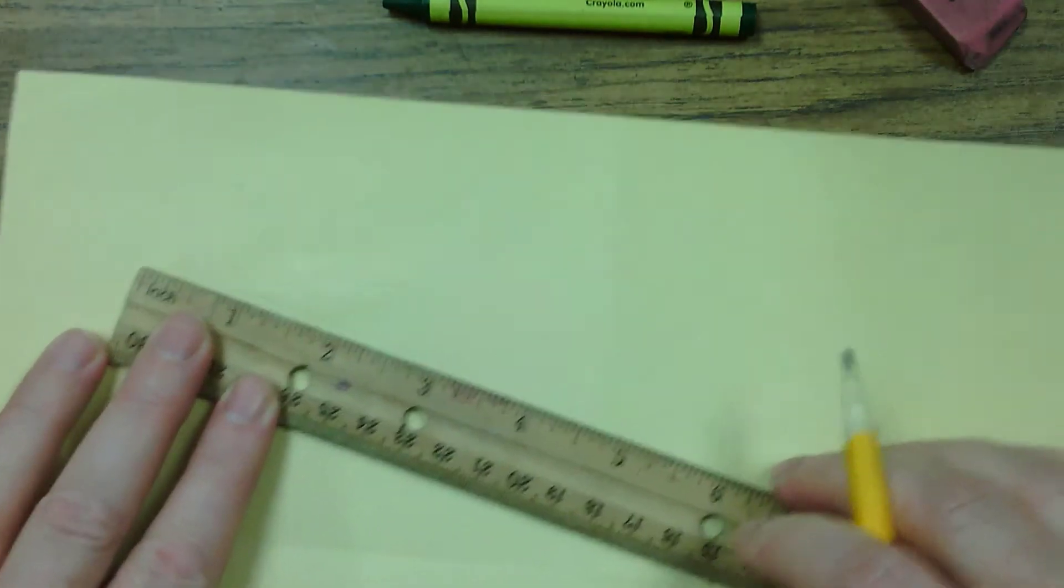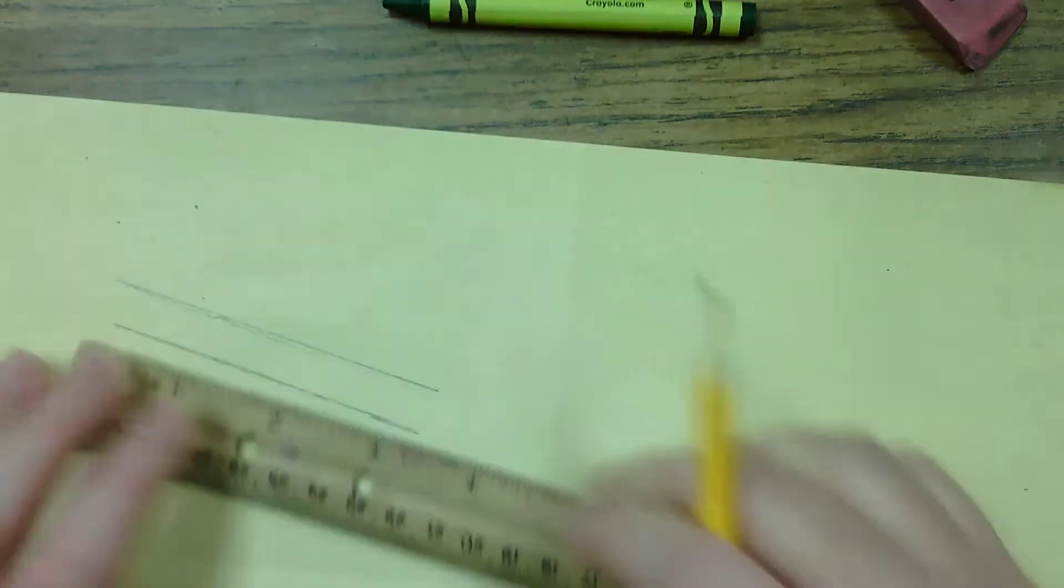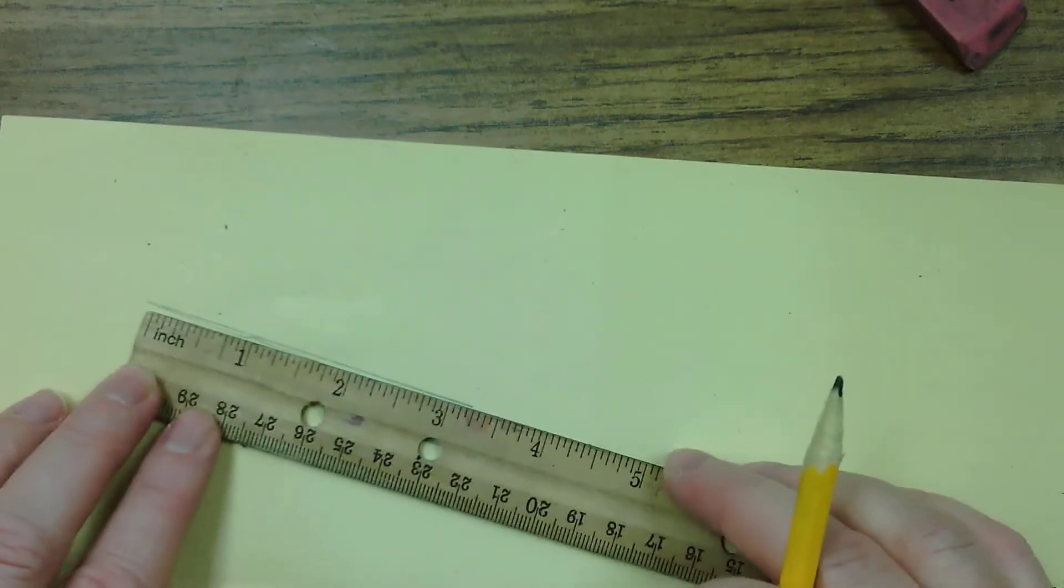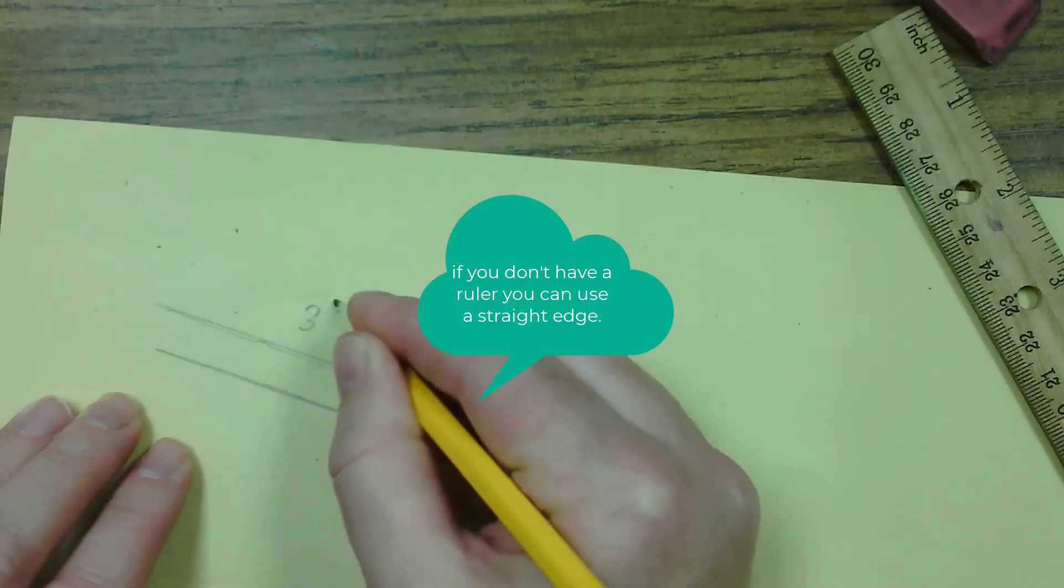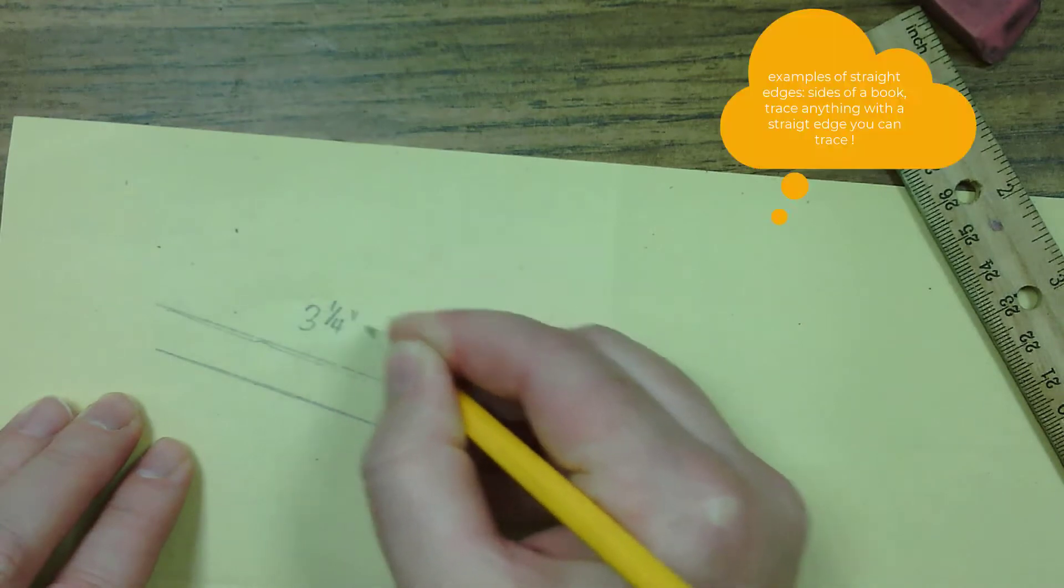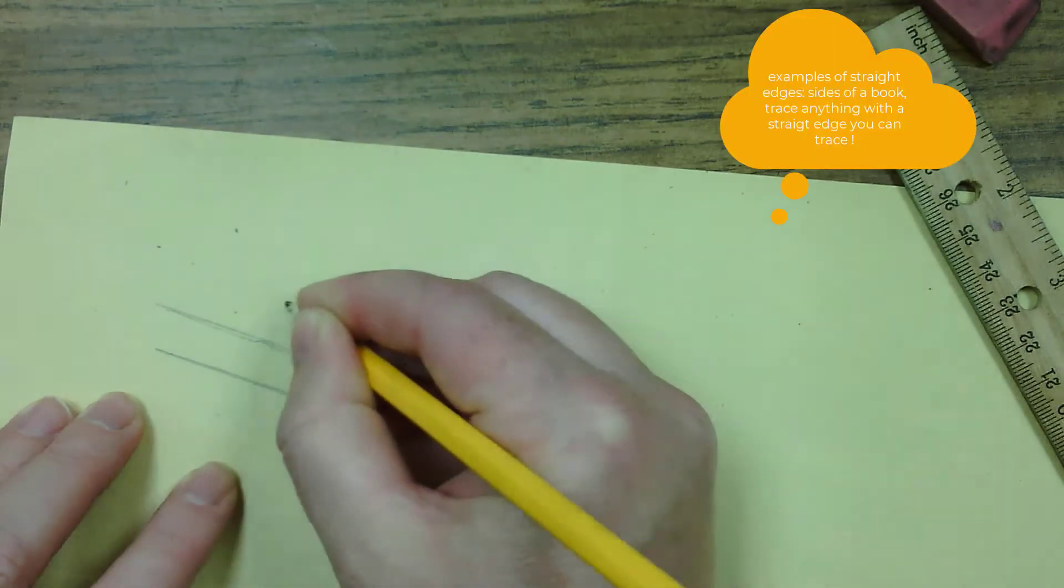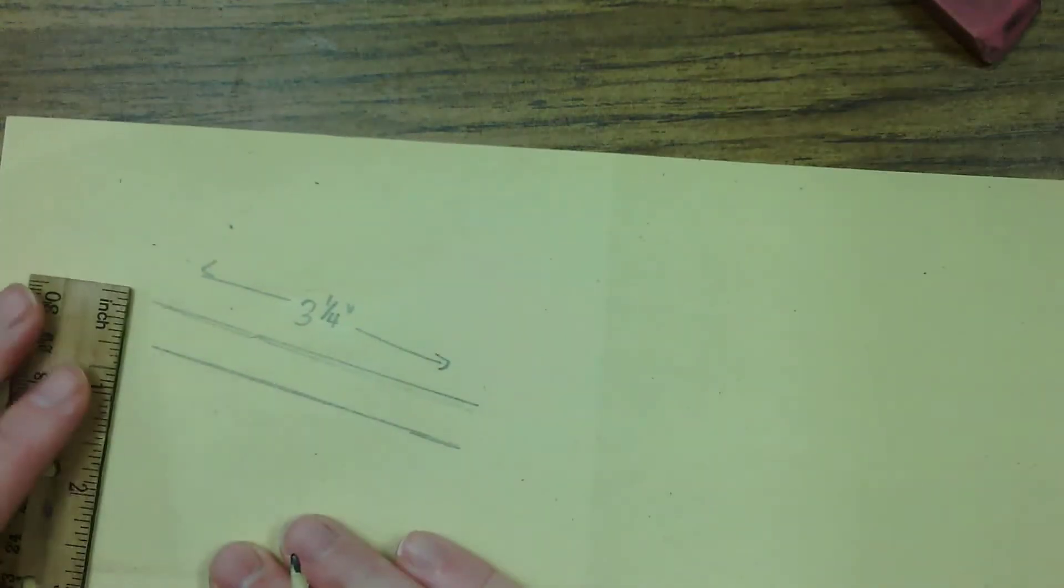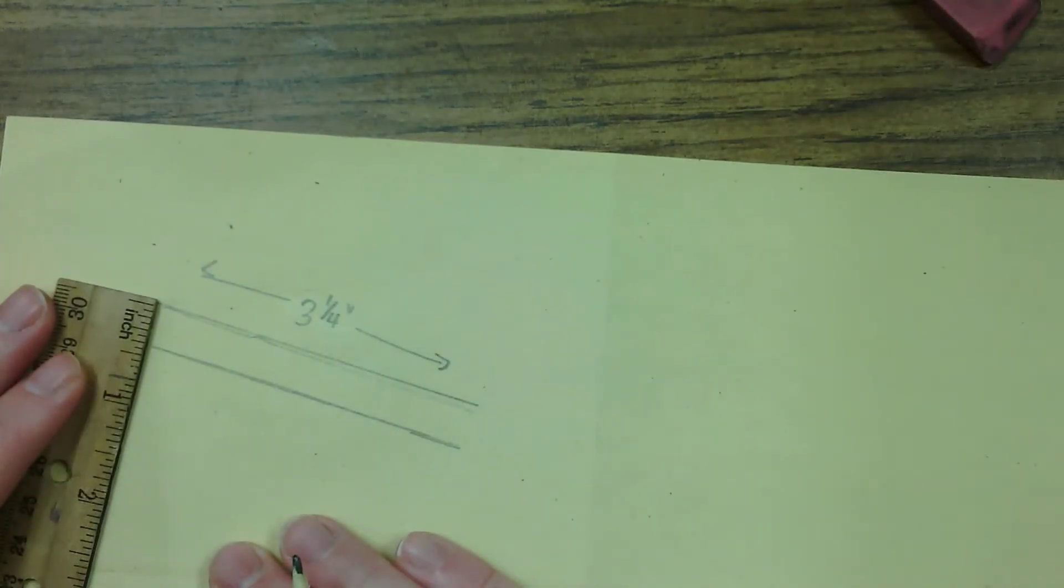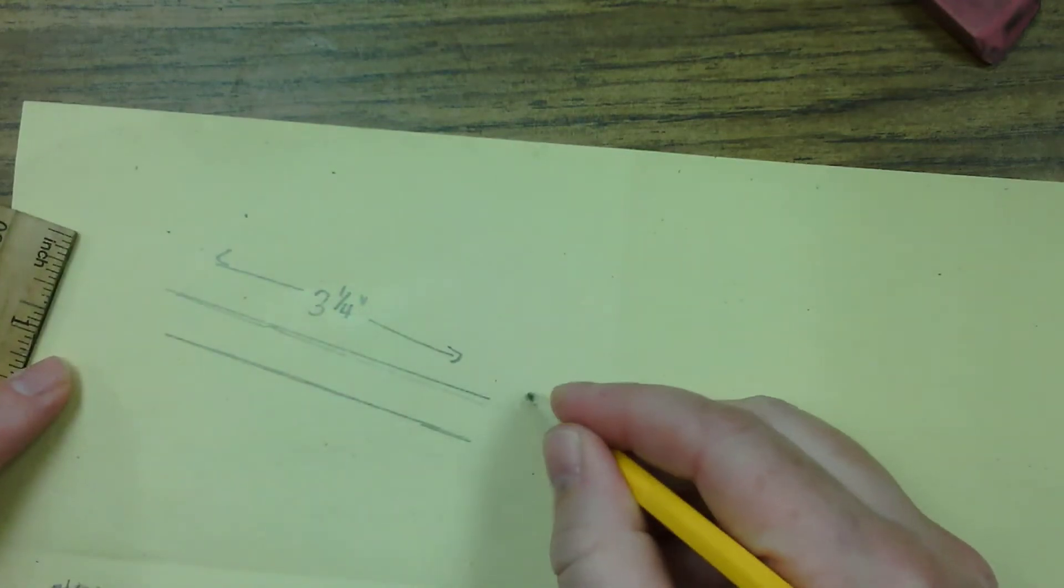If you don't have a ruler handy, I will give you the dimensions in just a second. Make sure your lines are parallel. So about three and one-quarters of an inch long. Two lines that are three and one-quarters of an inch long.